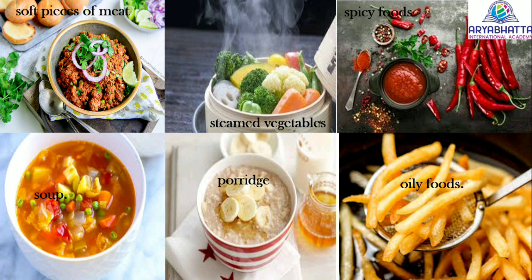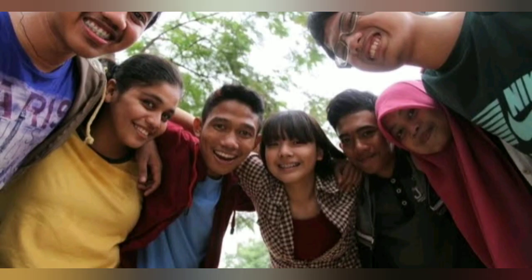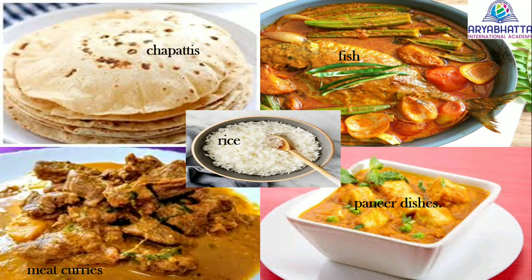Old people usually do not eat very oily or spicy foods. Babies and some old people do not have teeth, so they eat foods that are soft. Young people as well as middle-aged adults eat a wide variety of foods like rice, chapattis, fish and meat curries, pulses and paneer dishes.